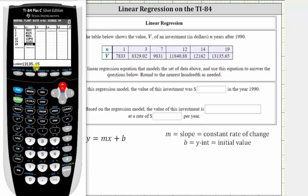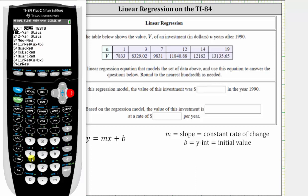Now that we have the data in the calculator, we go back to the home screen by pressing second mode for quit and perform a linear regression. We press STAT, right arrow once to calculate, option four for linear regression. So we press four.